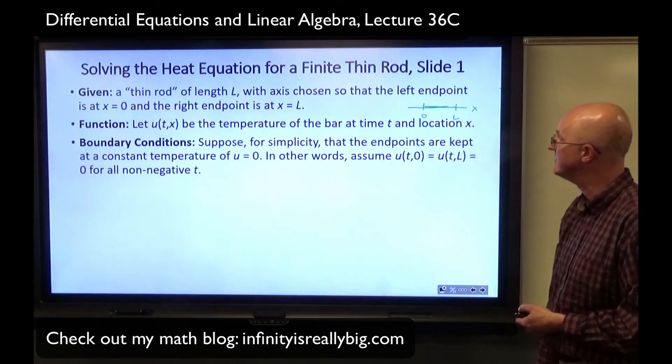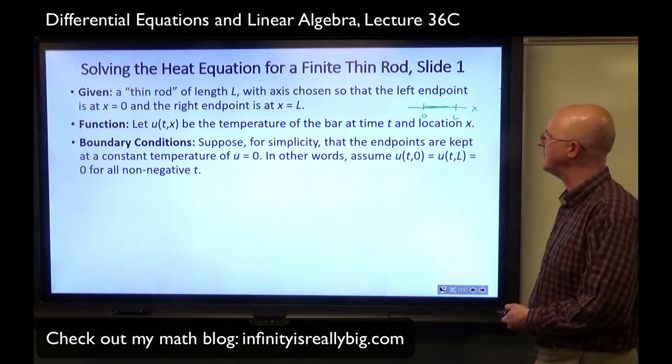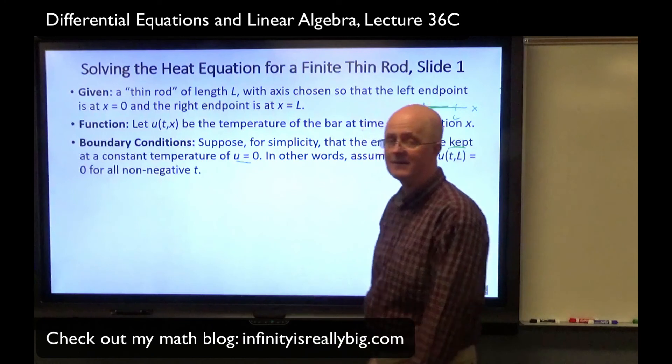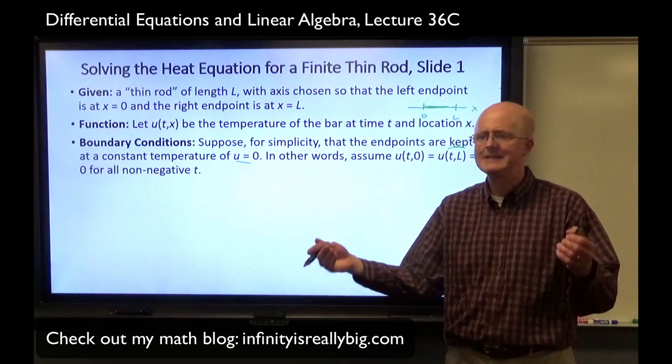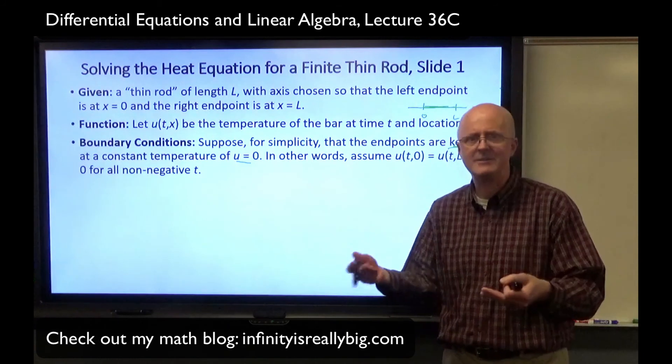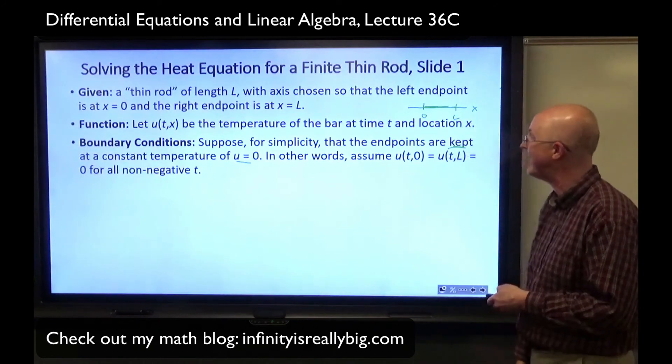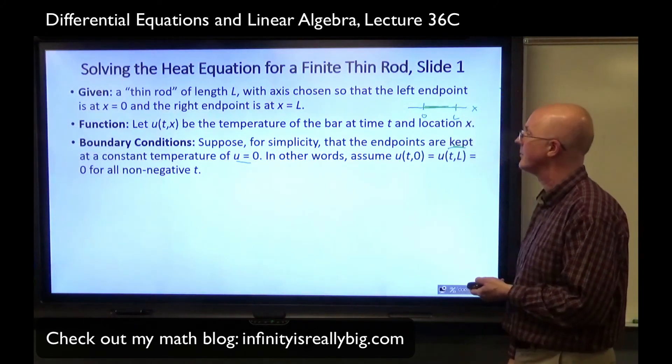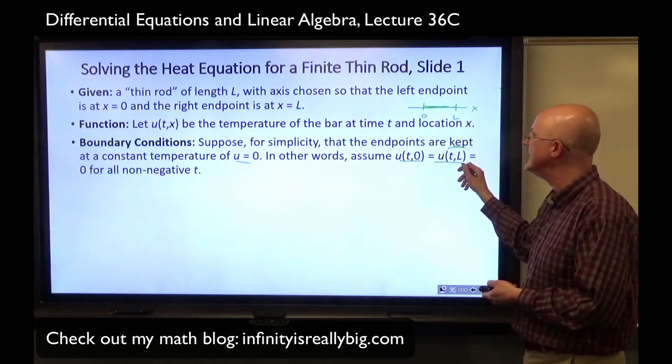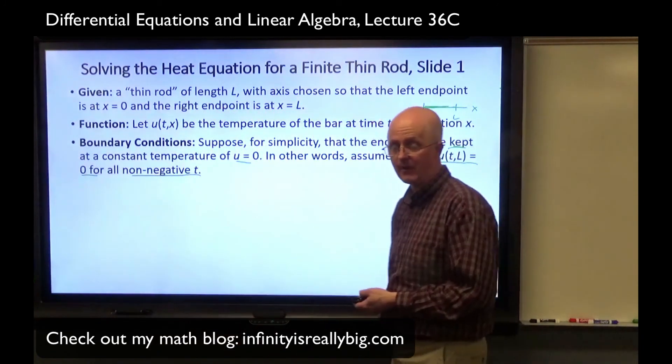Boundary conditions. Suppose, for simplicity, we could consider other examples that are not so simple, that the endpoints are kept at a constant temperature of 0. Kept at a constant temperature for all t, no matter what t is. We are somehow setting it up so that the ends of the bar have a constant temperature. They may be touching something that's kept at a constant temperature. Don't worry about the actual real-life details. We are mathematically modeling here. So assume u(t,0) = 0 and u(t,L) = 0 for any non-negative t.